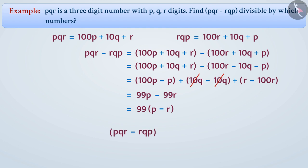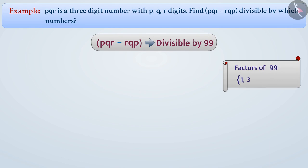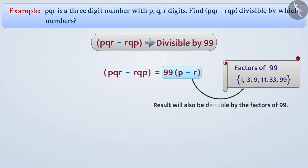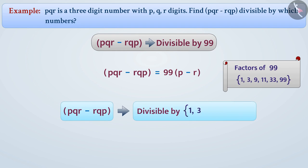is divisible by 99. We know that the factors of 99 are 1, 3, 9, 11, 33, and 99. Since the result of the subtraction pqr minus rqp is divisible by 99, the result will also be divisible by the factors of 99. So pqr minus rqp is divisible by 1, 3, 9, 11, 33, and 99.